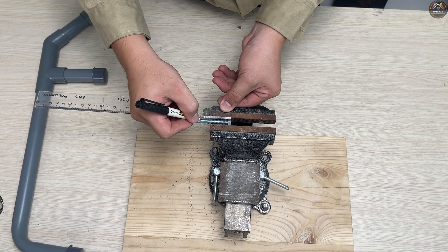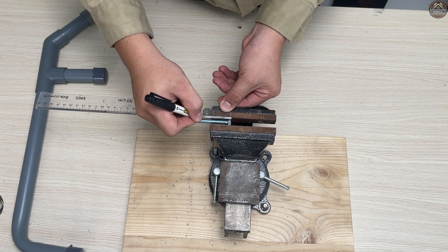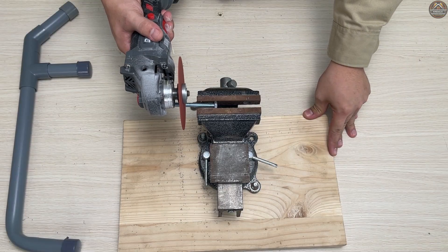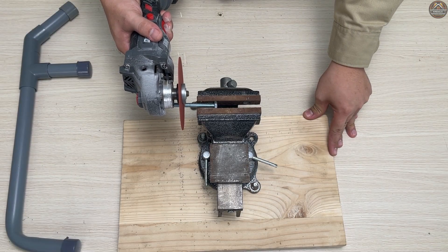To secure the saw blade, we'll use a long screw. Cut it in half, file it down thin, and drill holes at both ends.